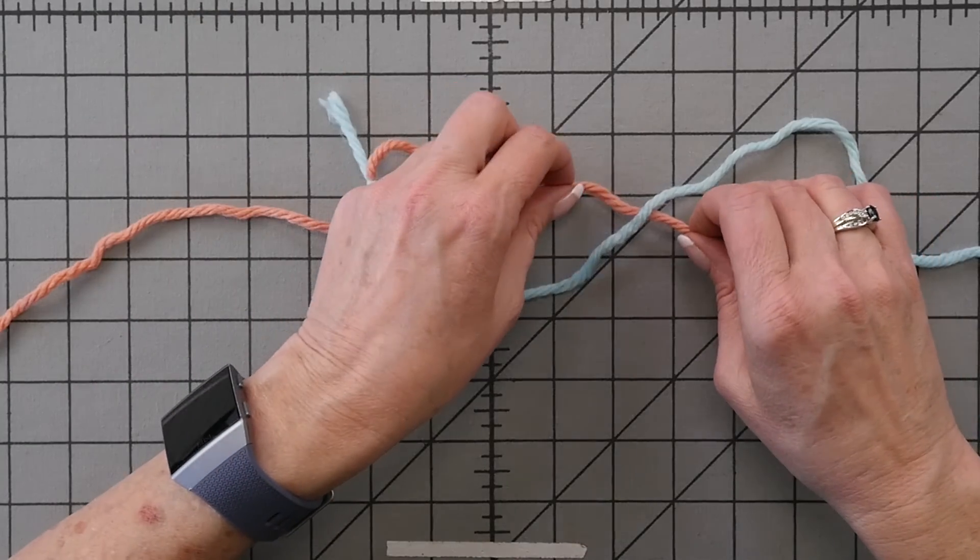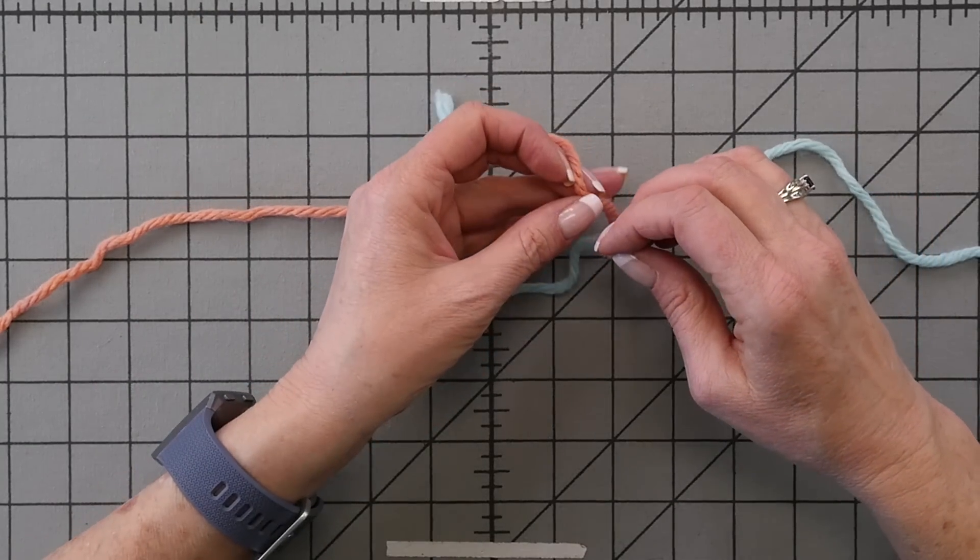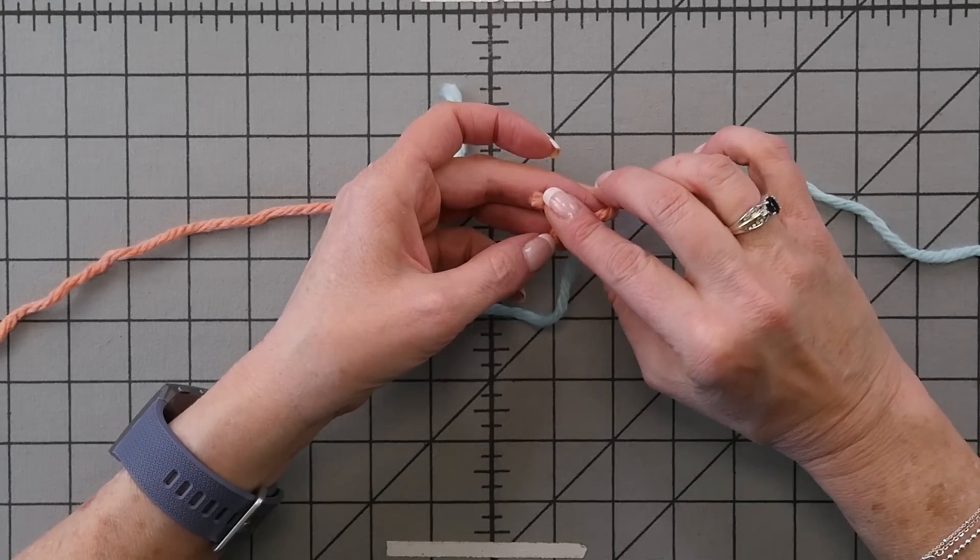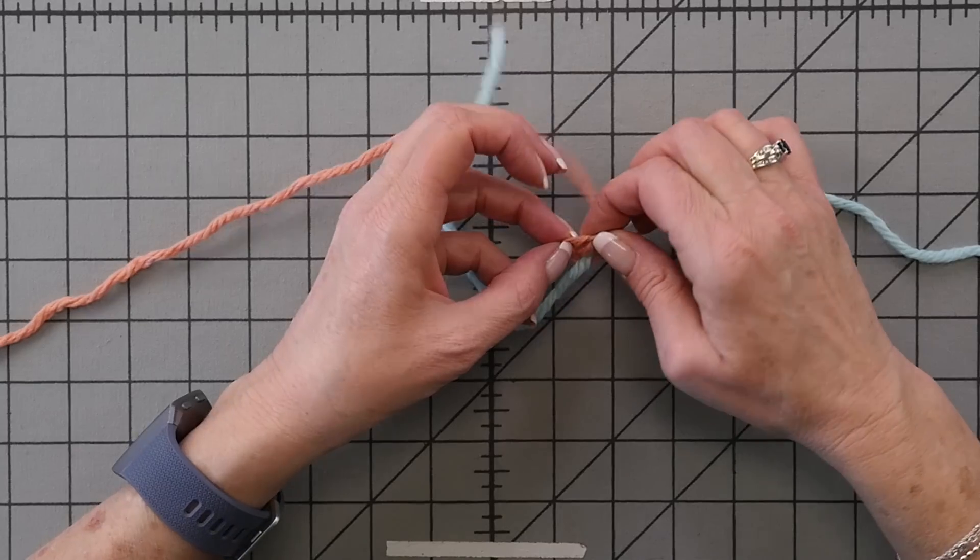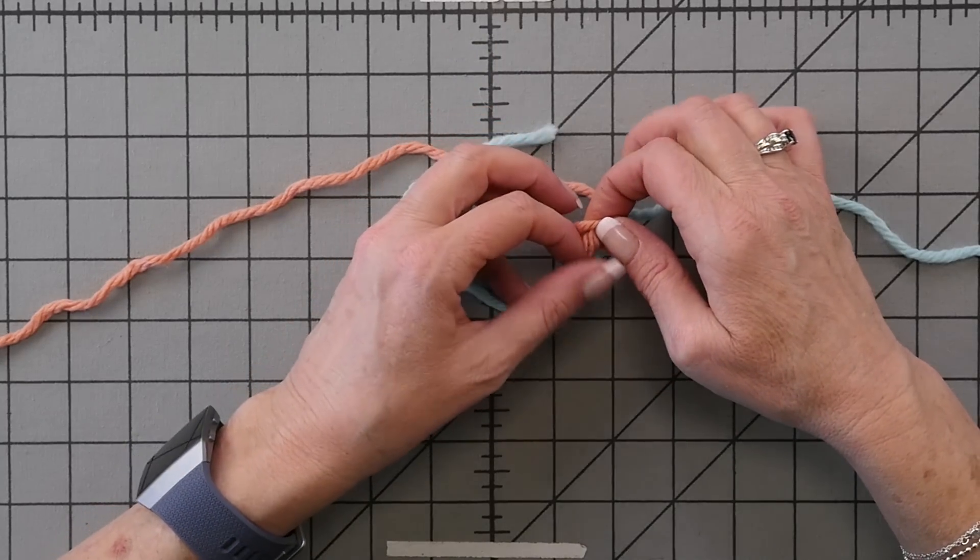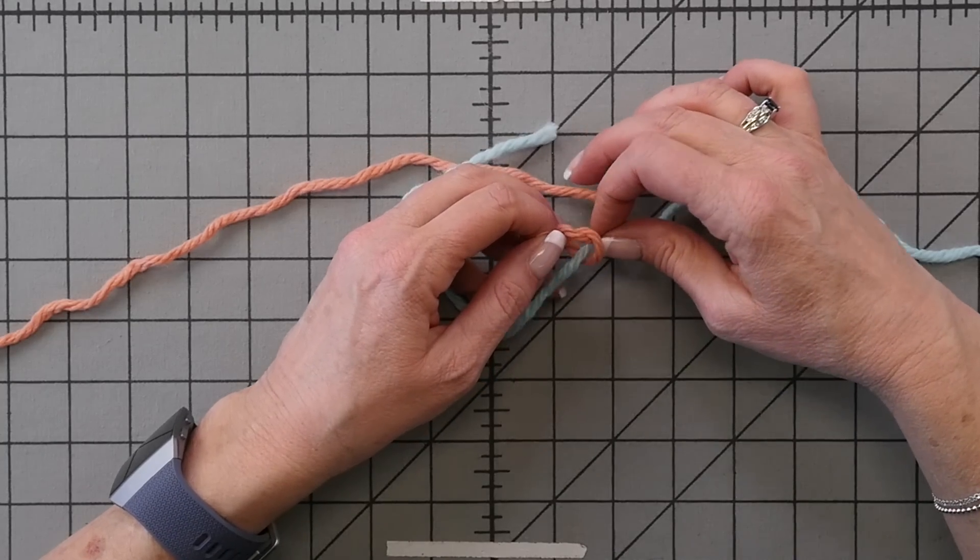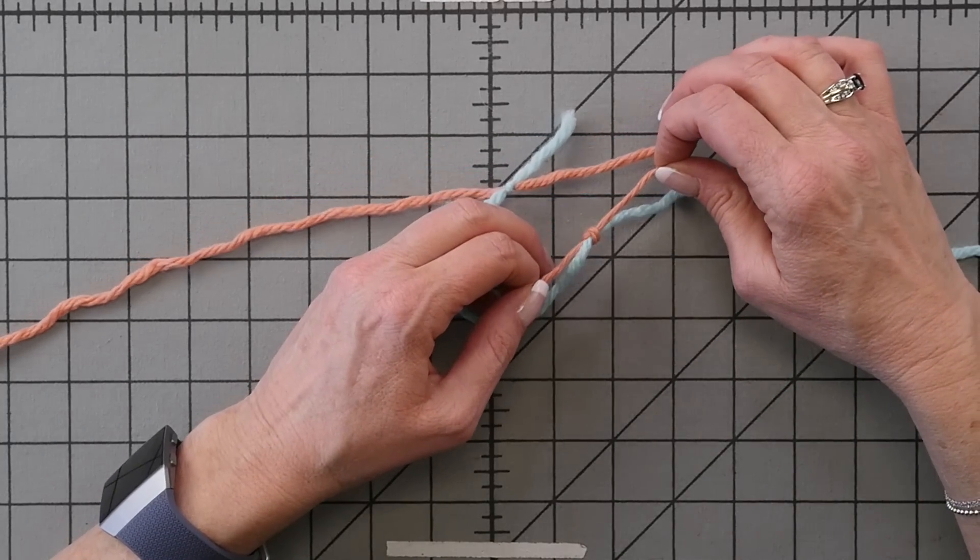And now we'll tie the pink yarn, the end of the pink yarn, around the blue yarn. In a single knot, both times. Again, give it a good tug.